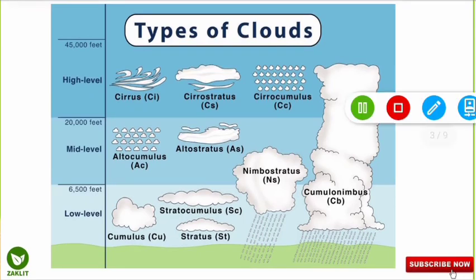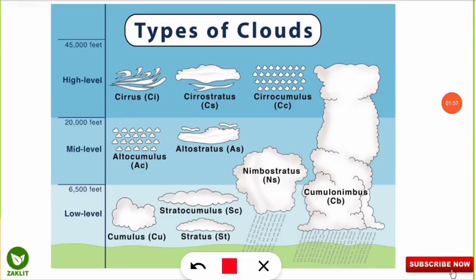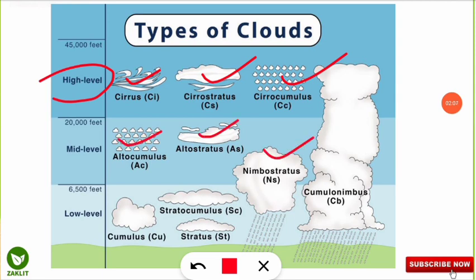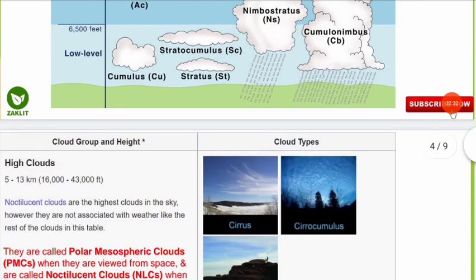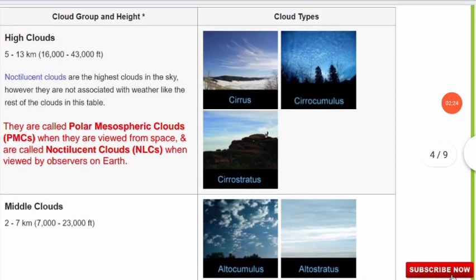You should remember the names. The high-level clouds are cirrus, cirrostratus, and cirrocumulus clouds. The mid-level clouds are altocumulus, altostratus, and nimbostratus. The low-level clouds are cumulus, stratocumulus, and stratus. The cumulonimbus cloud extends from the lower to the higher level.